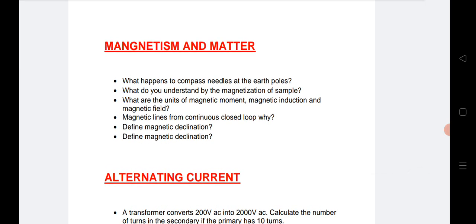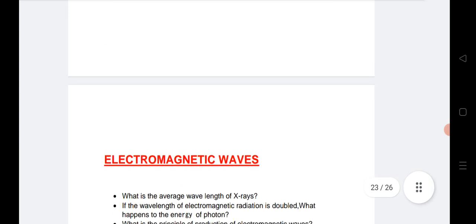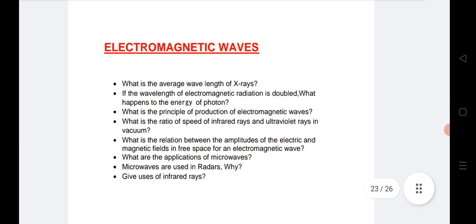Next is magnetism and matter, an important and scoring chapter. Alternative current - we will get one VSAQ. Very important VSAQs we have listed here. Electromagnetic waves - two VSAQs we are expecting this year. Already two VSAQs are given in the blueprint for this chapter.